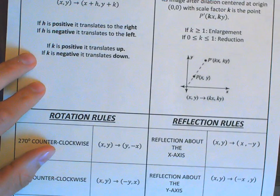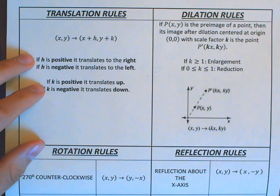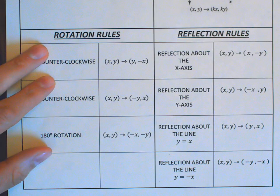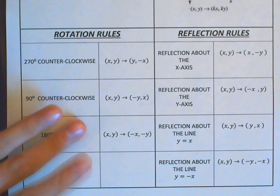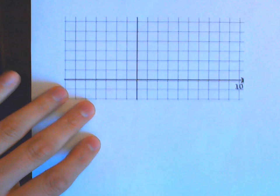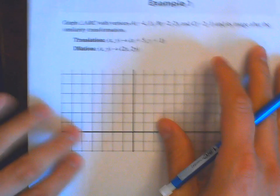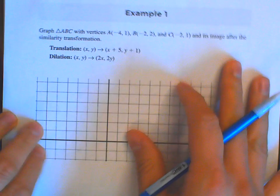Let's turn to page 117 and start our first example. Before we do that, please make sure you have this form out so you can refer to all the rules — this was emailed to you, so please have it handy because you will be needing it. Let's go ahead and start with example number one.